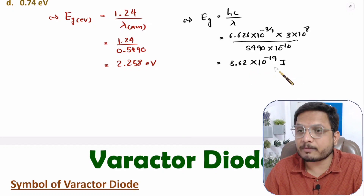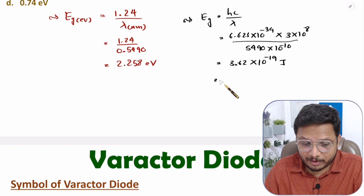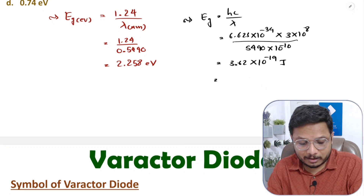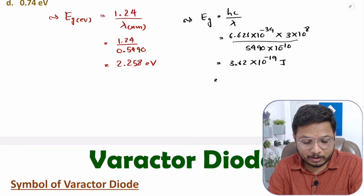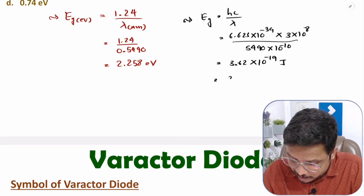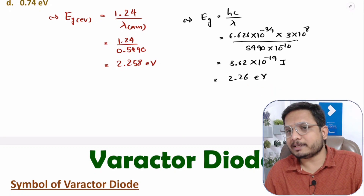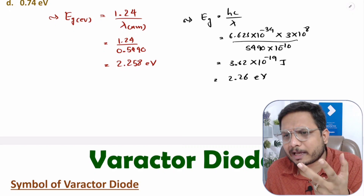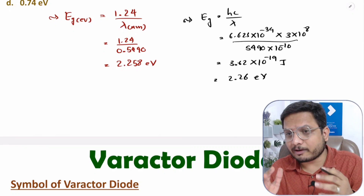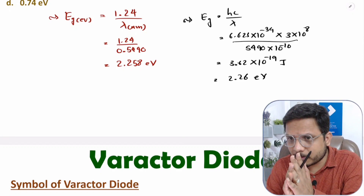We got Eg = 3.62 × 10⁻¹⁹ J. To convert to electron volts, divide by the charge of an electron: 1.6 × 10⁻¹⁹ C. So 3.62 / 1.6 = 2.26 eV. Both methods give the same answer of 2.26 eV. It's up to you which method you prefer. I hope you understood. If you have any questions, please note them in the comment section. Thank you for watching.